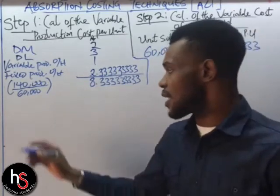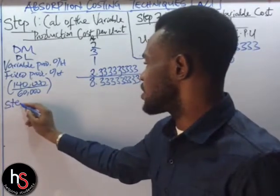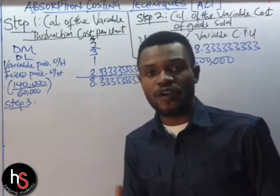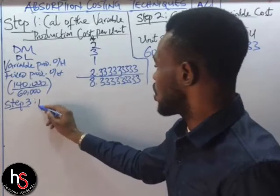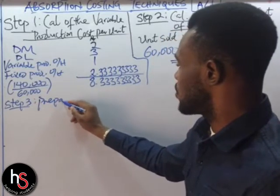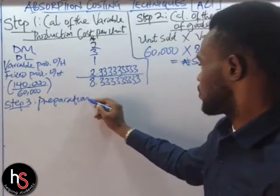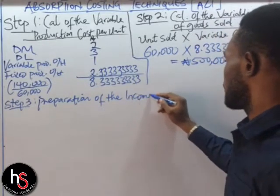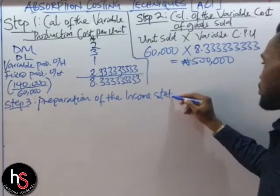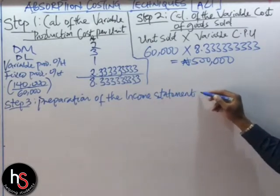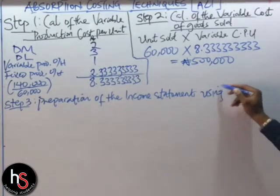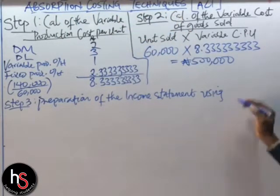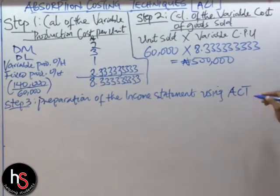Now we move to Step 3: the preparation of the income statement using the Absorption Costing Technique (ACT).